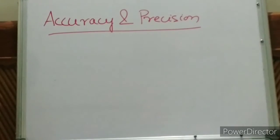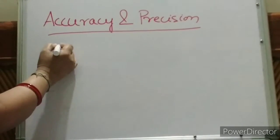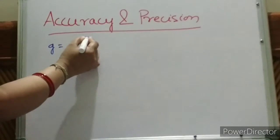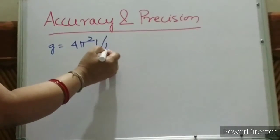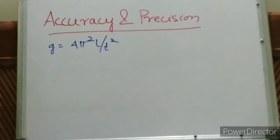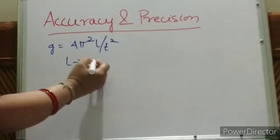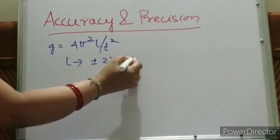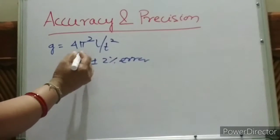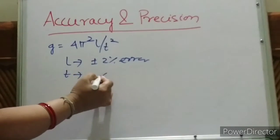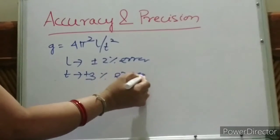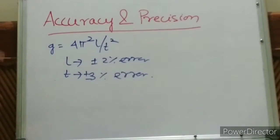Calculate the percentage of error in the determination of g = 4π²l / t², where l is measured with ±2% error and t is measured with ±3% error. You have to calculate the percentage of error in this determination.